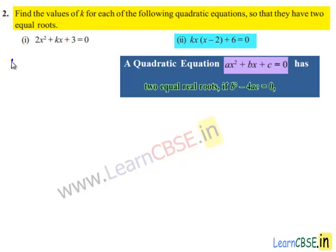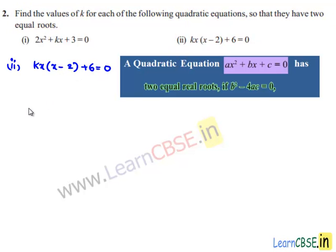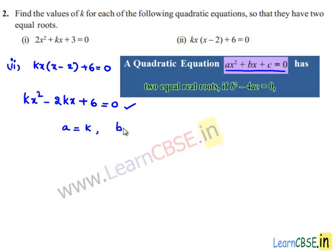Coming to the second part. The given equation is kx(x - 2) + 6 = 0, which can be written as kx² - 2kx + 6 = 0. Comparing with ax² + bx + c = 0, we get a = k, b = -2k, and c = 6. For two equal real roots, the discriminant b² - 4ac must equal 0.